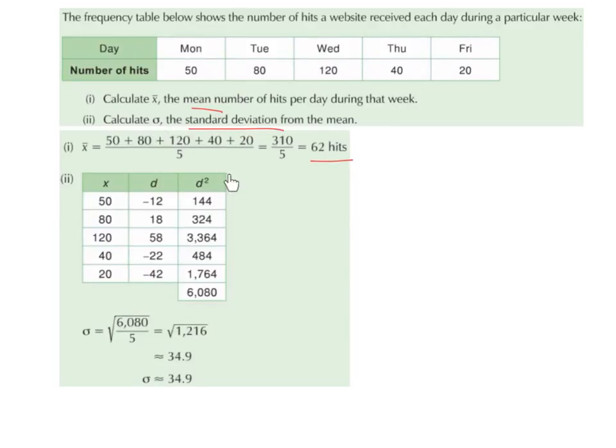So we draw out our table, and we start with our x values. So we've got 50, 80, 120, 40 and 20. And we get the difference between these and the mean.